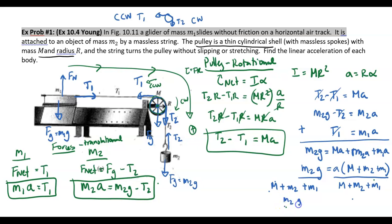So this is M2G over big M plus M2 plus M1. We factor out A equals A. And that is our final answer.